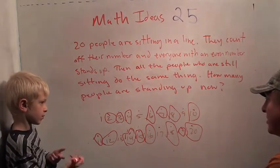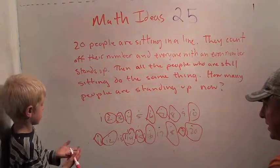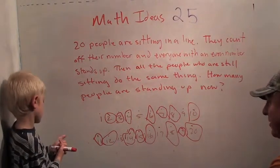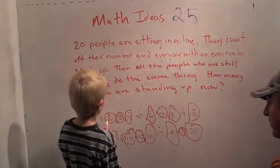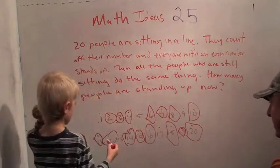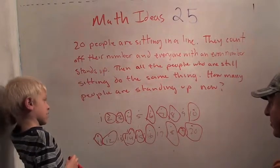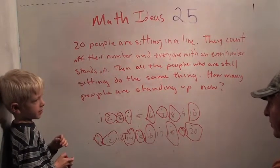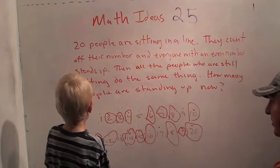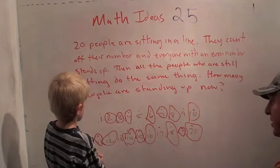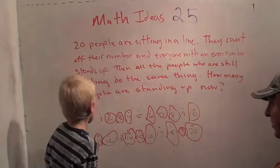Okay. Hey. Let me ask you a question. Suppose the people who are sitting down now played this game. So who are the people who are sitting down now? What were their original numbers? One, five, nine, thirteen, seventeen. Okay. So if they played the game now, who would be the first person to stand up? One. Why? Because we already did three. Well, who stands up? People who have even numbers when they count off. So what's one's number when one counts off?